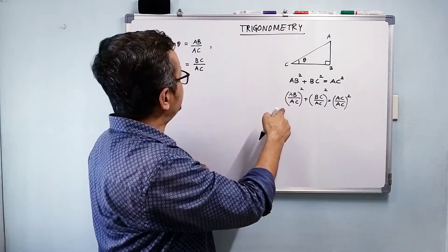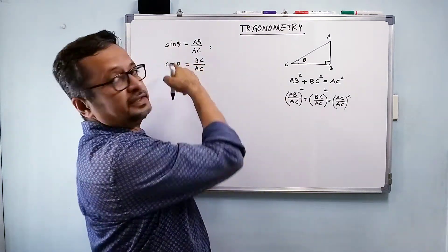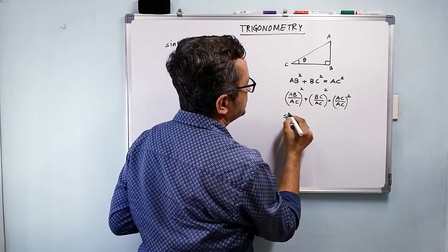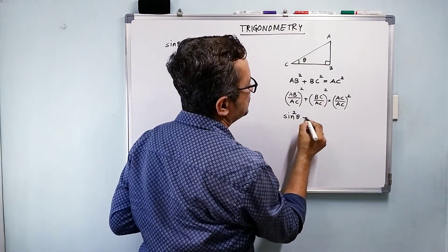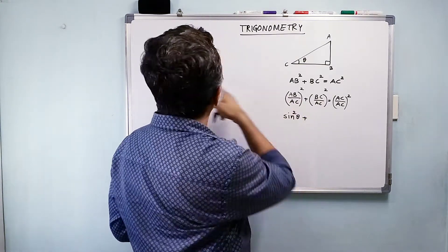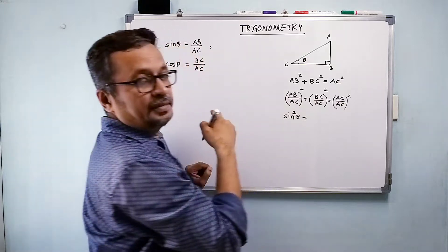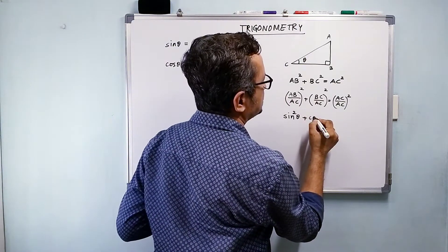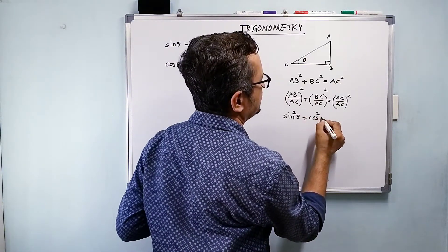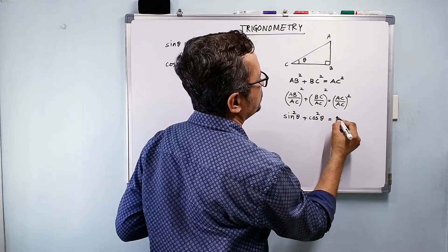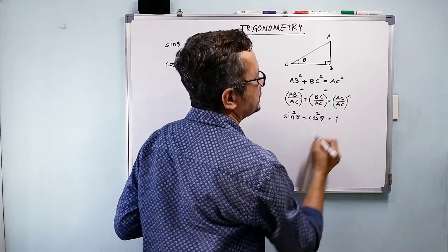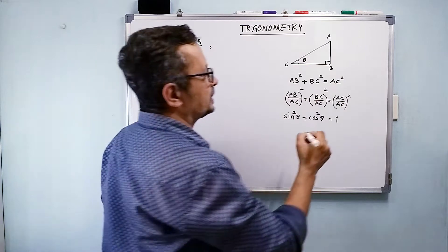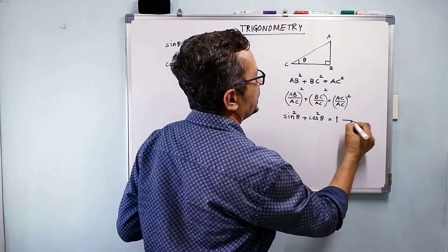AB upon AC — is it not sine theta? So sine²θ plus BC upon AC, which is cos²θ, is equal to 1. So this is our first trigonometric identity.